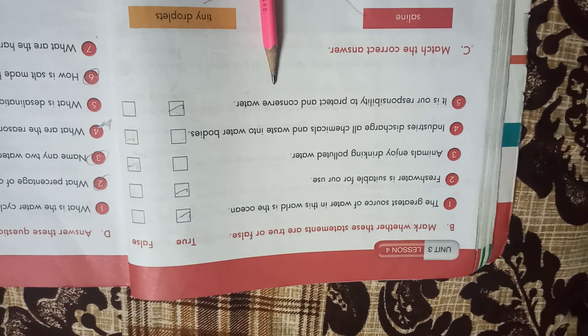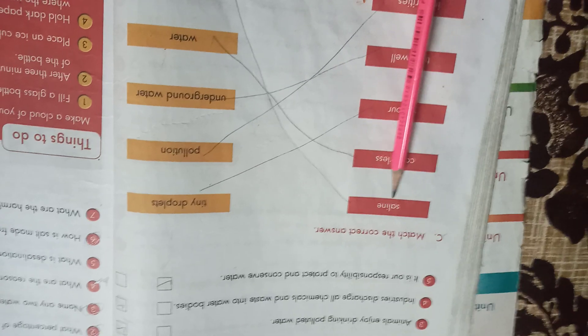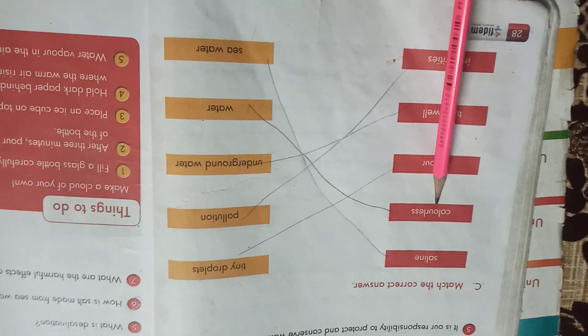And prevent all these impurities. Next one, we need to match the correct answer. Now we have to have one: sea land, Greenland, and sodium salt sea land. Next we have water.